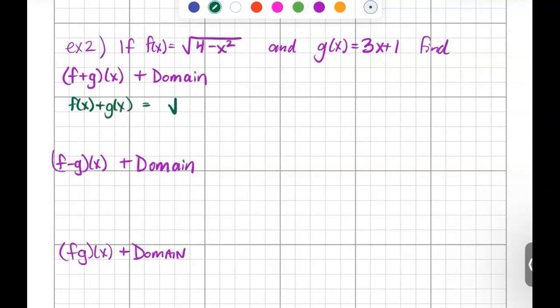So you're going to take the f of x function, square root of 4 minus x squared, plus the g of x function, 3x plus 1. They happen to not be compatible. There's no like terms. So that is as far as you can go.